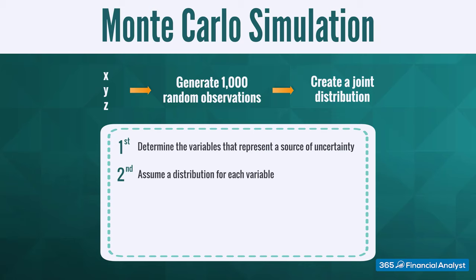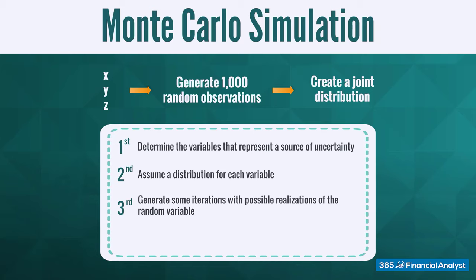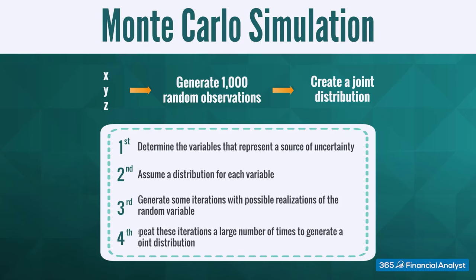The third step refers to the following: once we have chosen the different types of distributions describing the random variables, we need to carry out iterations with possible realizations for these variables. And fourth, by repeating the third step many, many times — hundreds but more likely thousands of times — we would be able to observe a large number of possible realization paths that ultimately indicate what could be expected in terms of the mean of the distribution.